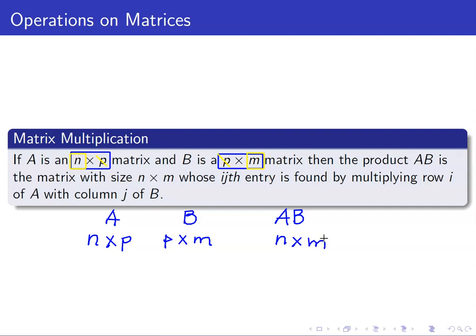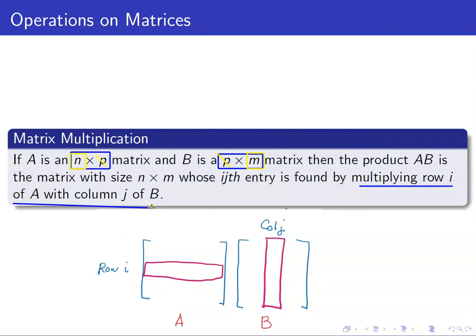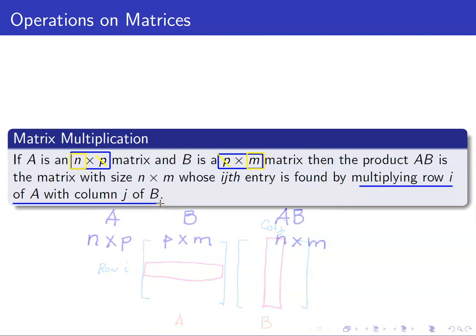We have A of size N by P and B of size P by M. The product AB will have size N by M. So we already know what the size of the product will be. Now let us discuss how to get the entries of this matrix AB. The i,j entry can be found by multiplying row i of A with column j of B.